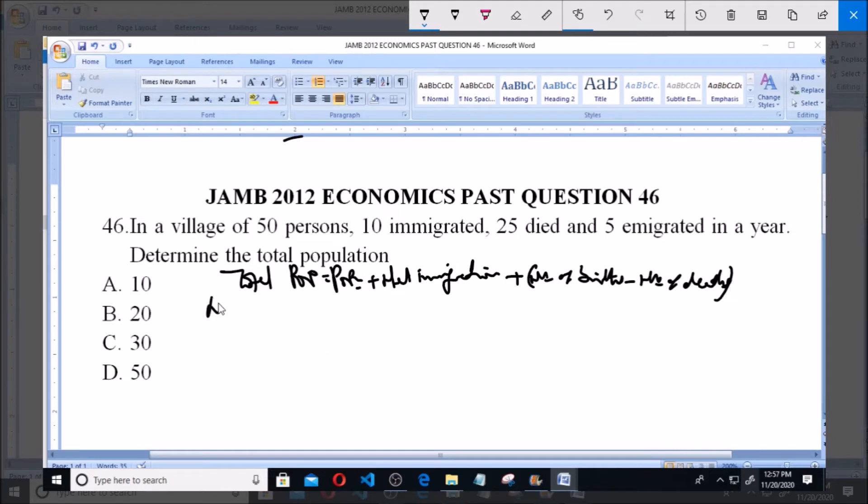So, note that our net migration - that's the question. Net migration equals immigrants minus emigrants.